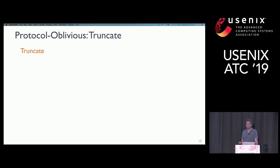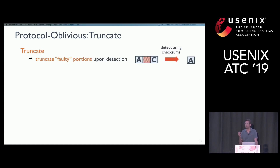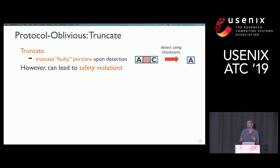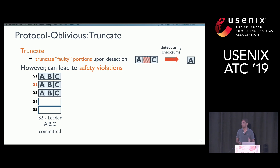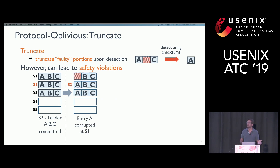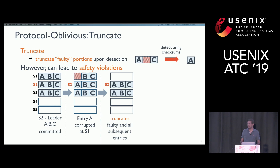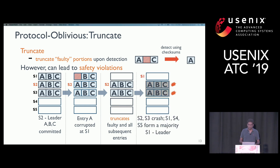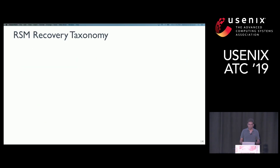For example, consider five nodes where three have agreed on a set of commands. A corruption appears in the first entry of the first node. The node realizes this but truncates that entry and all subsequent entries in the log, losing the entire state. It's then possible that the remaining nodes, with no knowledge of the committed data, elect a leader among themselves, silently losing the data. We studied all these approaches, and here is a summary: none are both safe and available simultaneously, many require manual intervention which can be error-prone, and none can recover fast — even if they can recover at all.